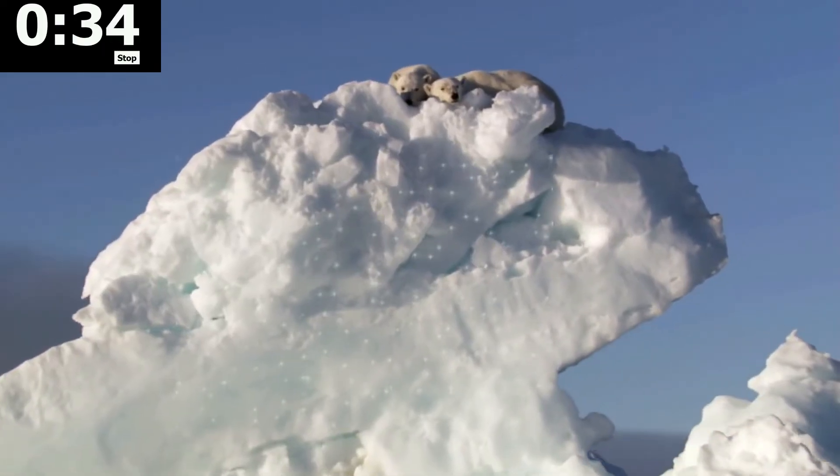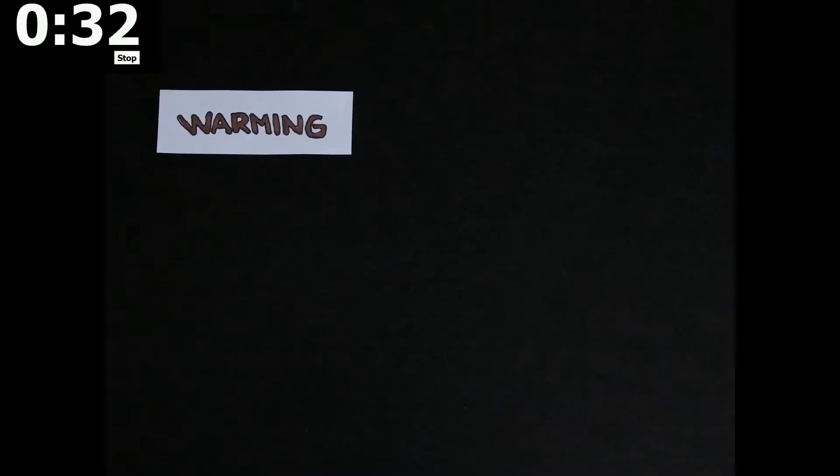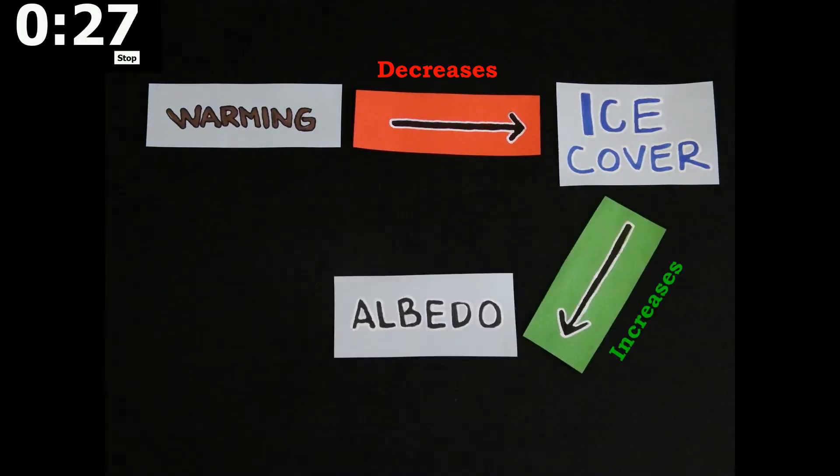Ice has a high albedo because it is light-colored and shiny. When warming occurs due to increasing levels of CO2, more ice melts. Ice cover would increase the Earth's albedo, which would then decrease warming.